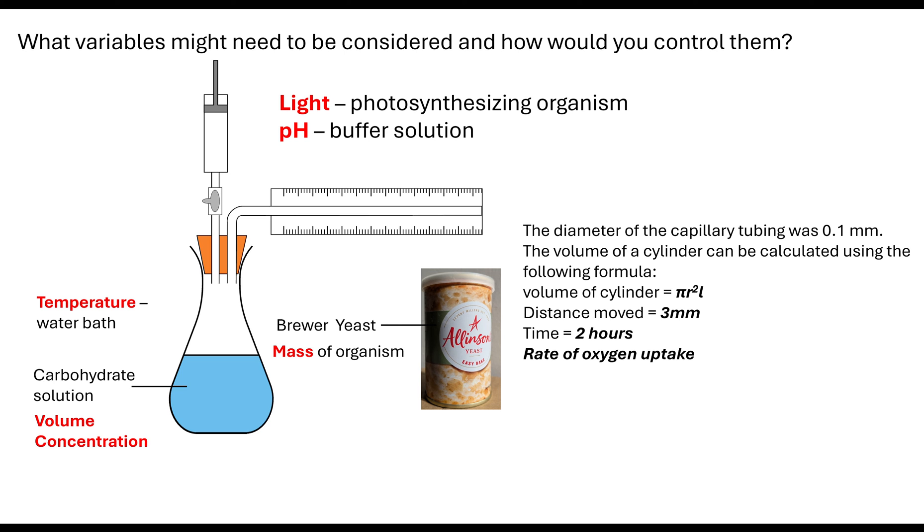And the other thing they can also do is look at, for example, if they tell you that the diameter of a capillary tube is 0.1 millimeters, they tell you that the coloured liquid moved a distance of 3 millimeters and they then give you the volume equation of a cylinder and then want you to work out the rate of uptake of that oxygen. So it's important you know how to calculate that. So if I do my calculations, then I use the equation pi r squared times the length, which is the distance moved. So we know our diameter was 0.1 millimeters, so our radius would be 0.05.